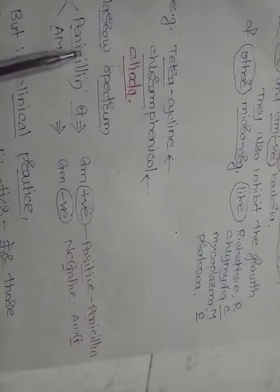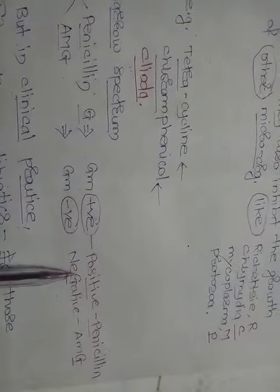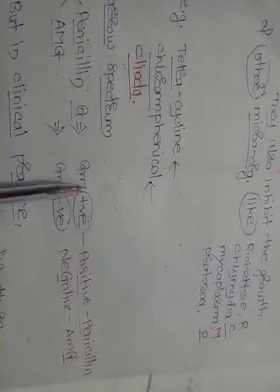Narrow spectrum antibiotics inhibit the growth of only gram-positive or only gram-negative bacteria. For example, penicillin G is effective against only gram-positive bacteria. A memory aid: penicillin G goes with gram-positive. Aminoglycosides, on the other hand, are effective against gram-negative bacteria. So these drugs have a very narrow spectrum of activity.